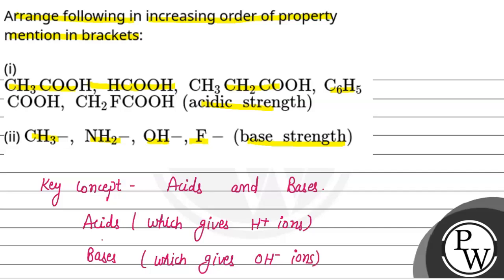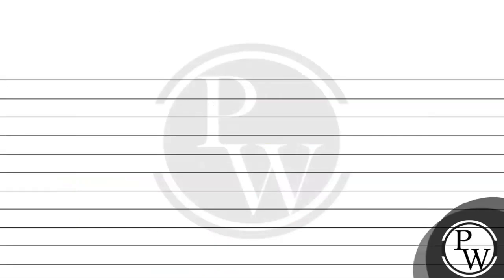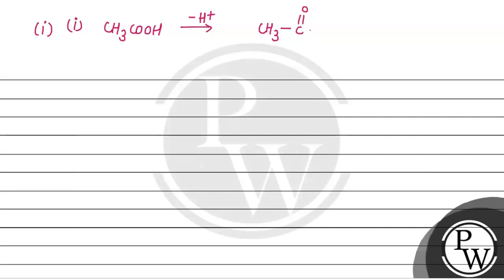First part में हमारे पास पहला compound है CH3COOH। इसे ionize करें, मतलब minus H-positive करें, तो यह acidic character शो कर रहा है। H-positive को lose करने के बाद हमारे पास CH3COO- बनेगा। Acidic strength तब ज़्यादा होगी जब यह ion stable होगा।